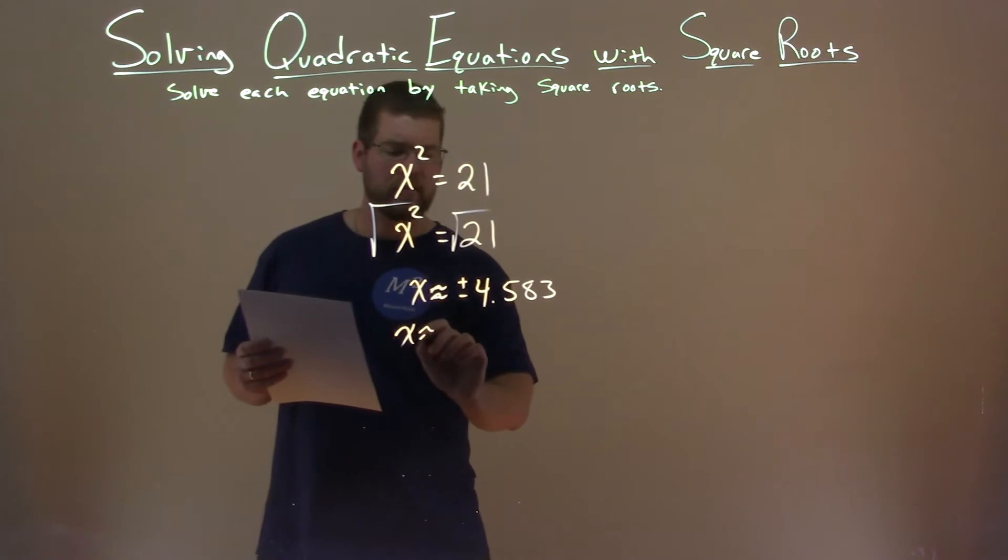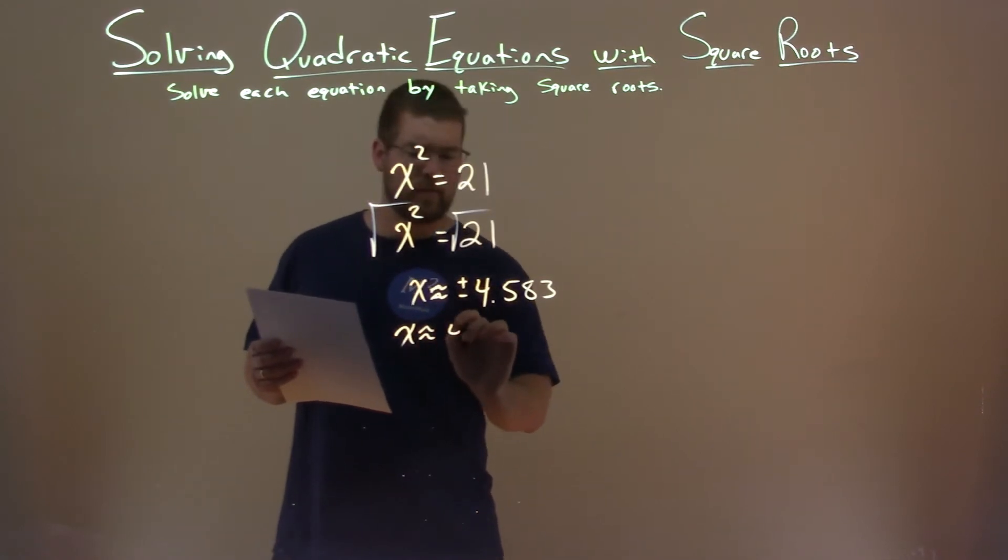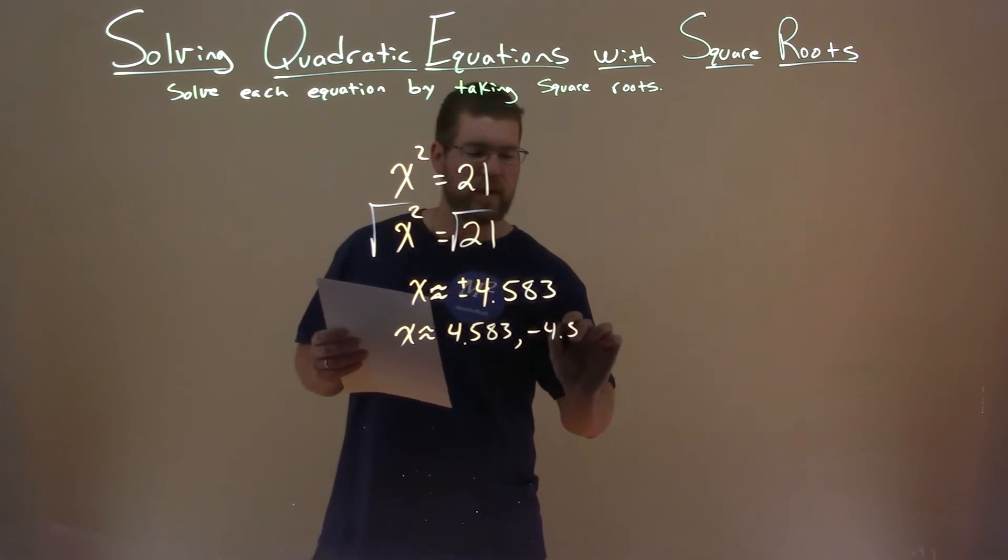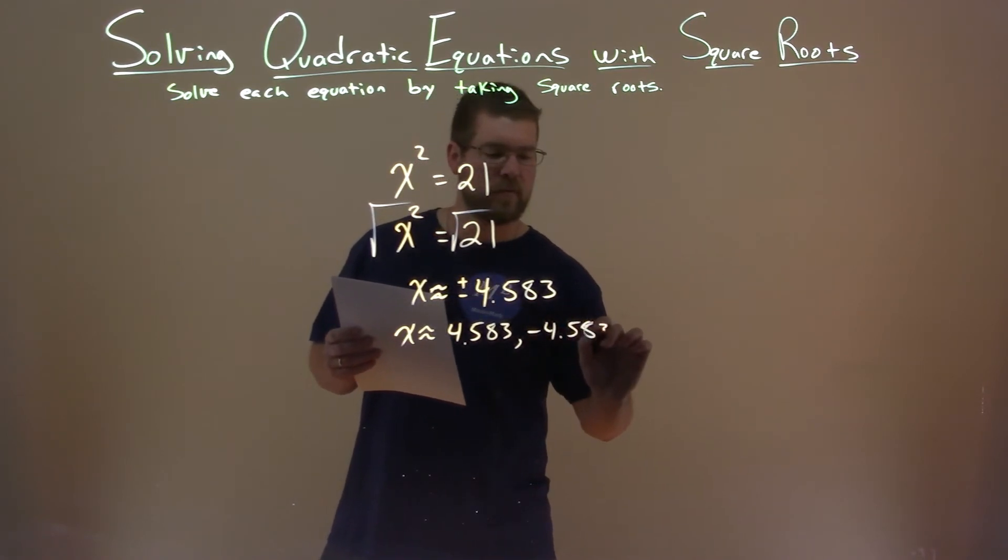will give us 21 from our original equation. And that x is approximately, well, we can write it like this, 4.583, and negative 4.583, and that's rounded.